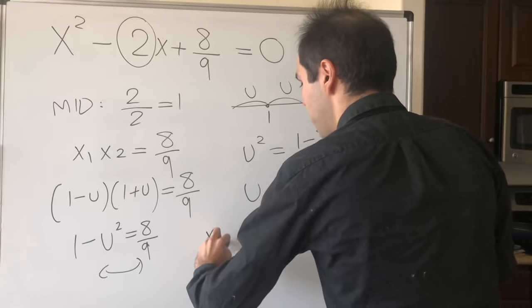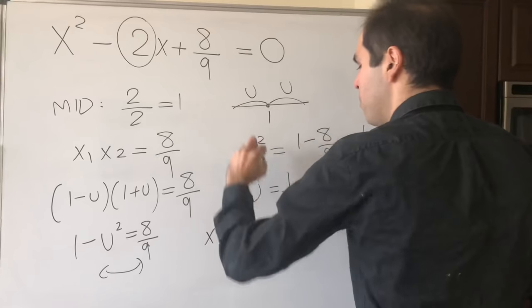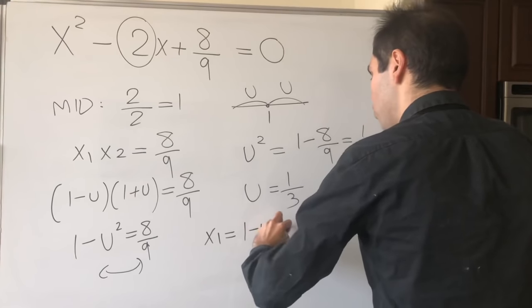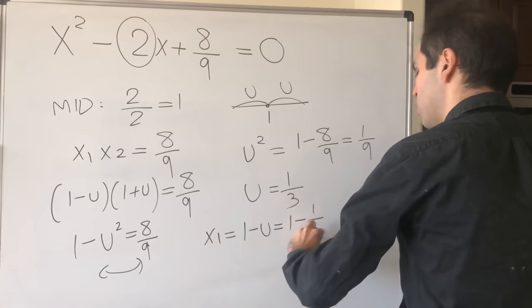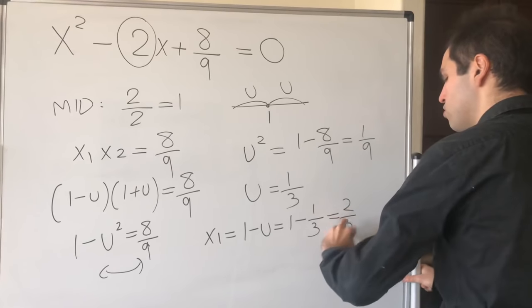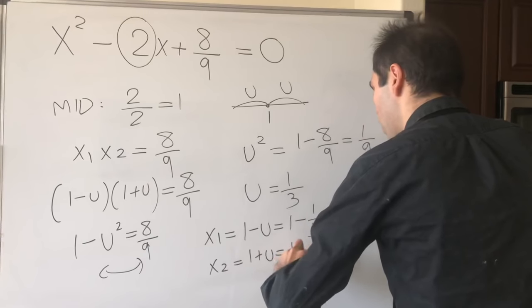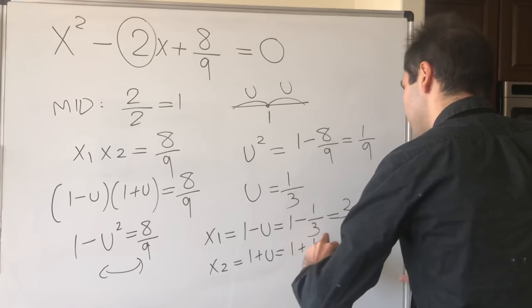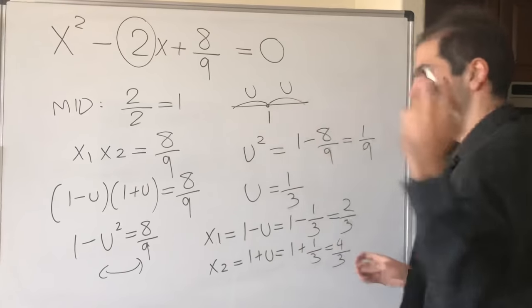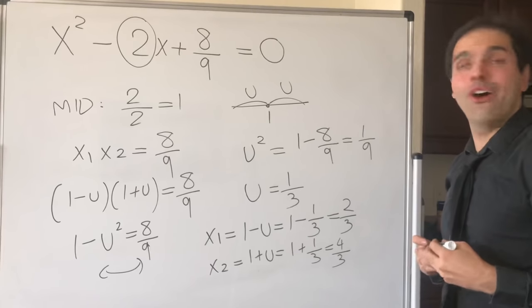So in particular, the left root is 1 - u, which is 1 - 1/3, and that's 2/3. And the second root is 1 + u, which is 1 + 1/3, and that's 4/3. You see? That's it. How awesome is that?